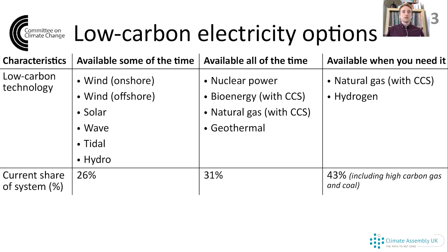In the third column are technologies that run all of the time. Generally this is a good thing - constant supply means it's often cheaper for operators to produce their power. But this means they can't flexibly reduce or increase their output, making them slightly less useful to the system. These technologies produced around 31% of the UK's electricity last year, mostly from nuclear power but also from large scale bioenergy. Other technologies could play a role here, such as natural gas with carbon capture and storage (CCS), or geothermal energy.